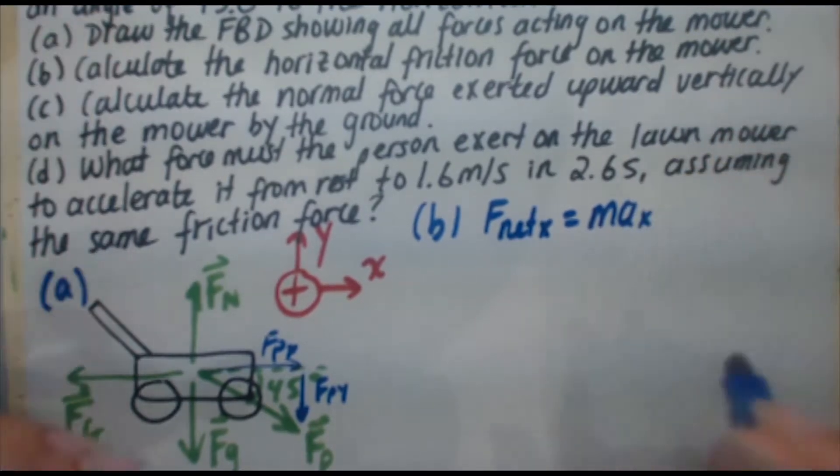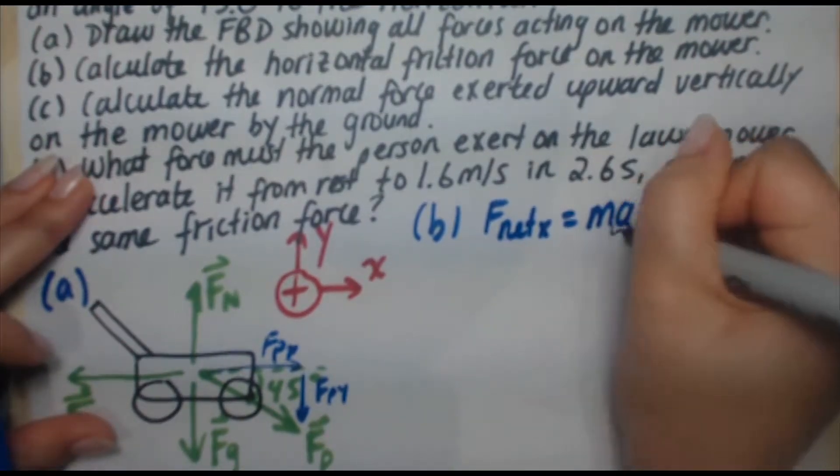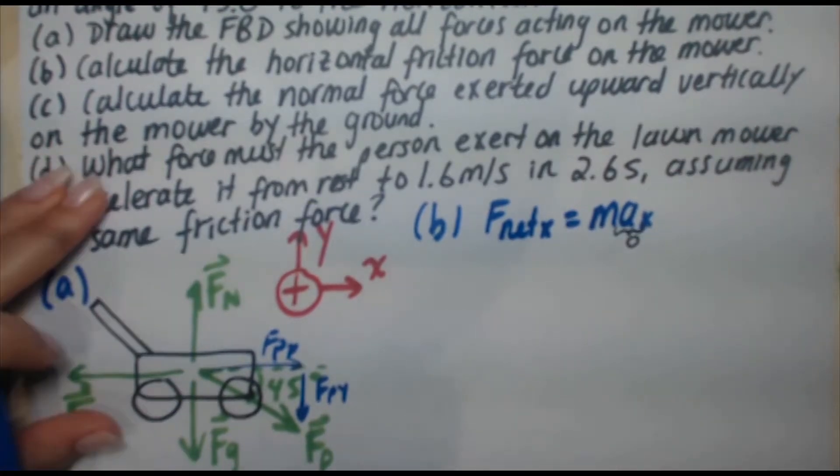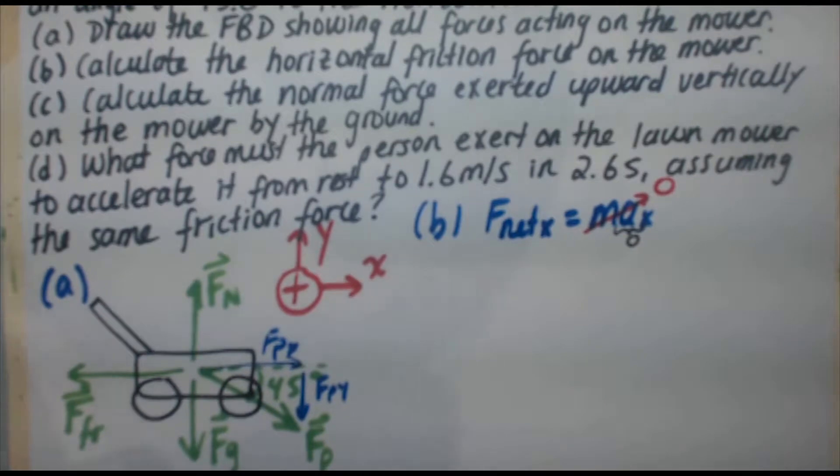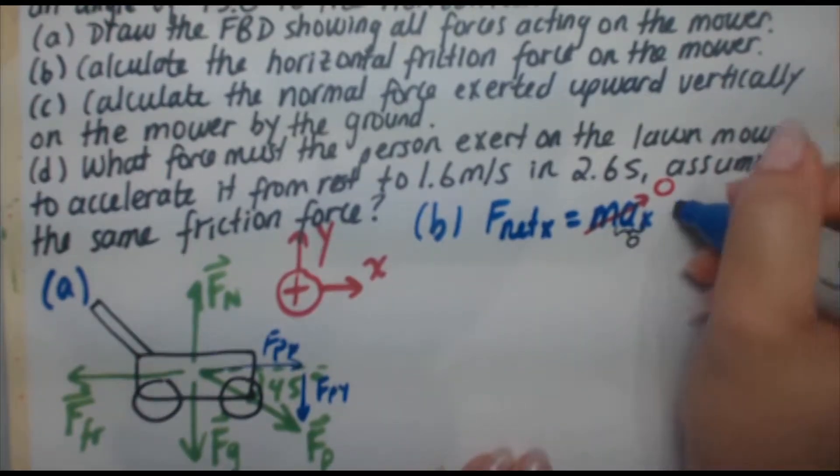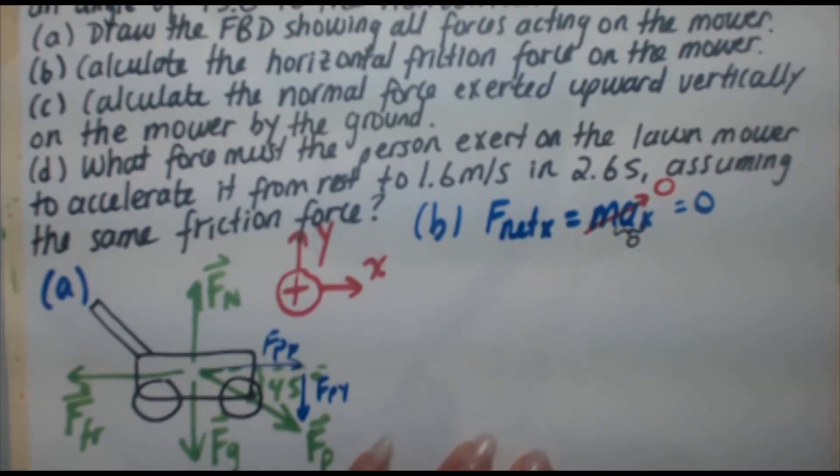So we're going to do F net x equals max. Okay, but we just stated that acceleration is zero, right? Because we're moving at constant speed according to the question. Zero times any number is zero. That cancels out the right side. So we're left with F net x equals zero.